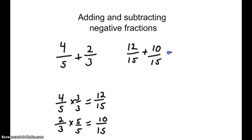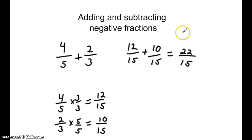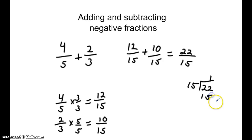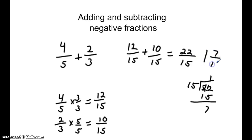The 4 fifths represents 12 fifteenths, and the 2 thirds represents 10 fifteenths. When we add them together, the denominator stays the same, and our numerator would then be 22 fifteenths. We need to turn this improper fraction into a mixed number. We divide 15 into 22, and it goes one time with a remainder of 7, giving us one whole and 7 fifteenths.